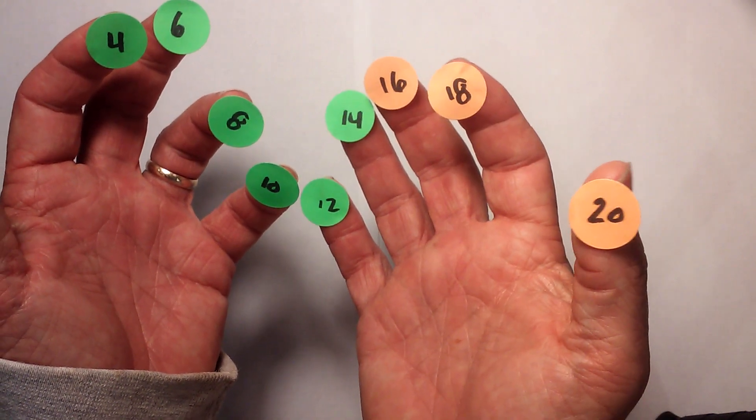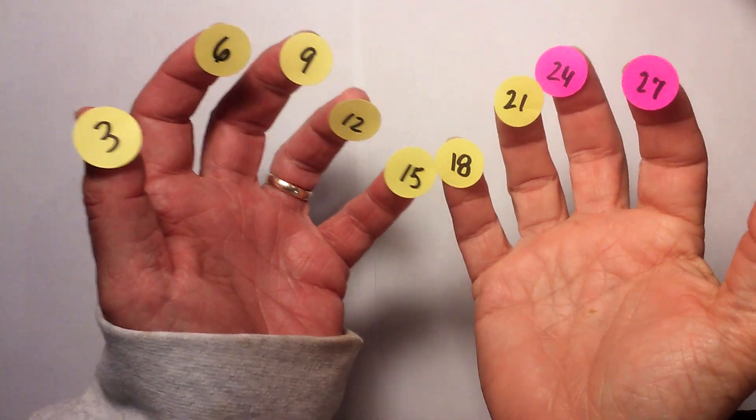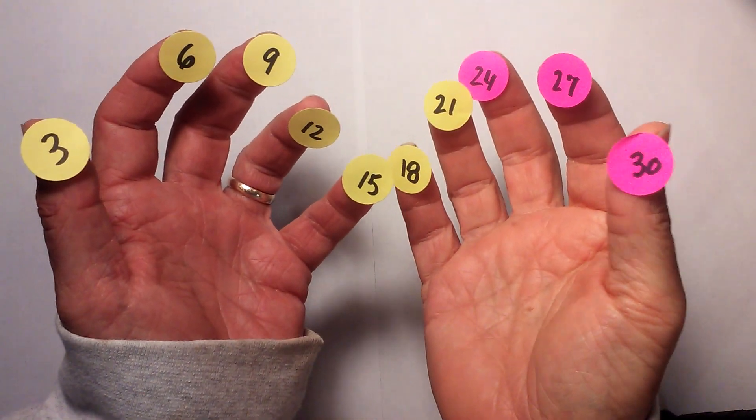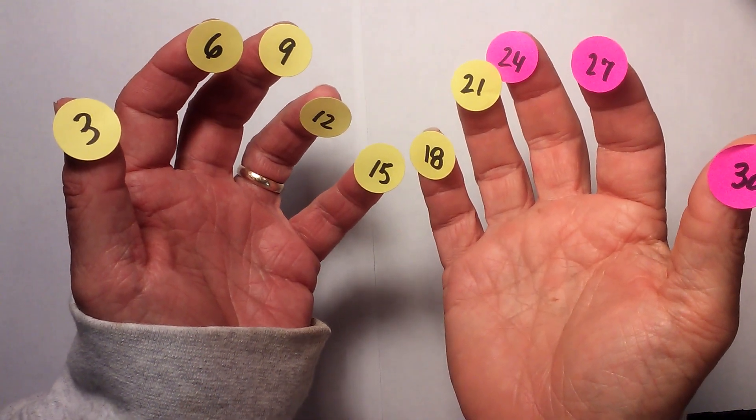Up next are your 3s. 3s are a bit like 7, there's not really a pattern to follow, but let's go ahead and use what we've already learned.